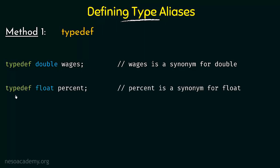Let's take one more example: typedef float percent. Here, percent is a synonym for float, meaning we use the typedef keyword to specify that instead of the word float we will be using percent from now on. So if I make a declaration saying percent a1 equal to 2.5, it actually means float a1 equal to 2.5 — we are replacing the word float with percent.